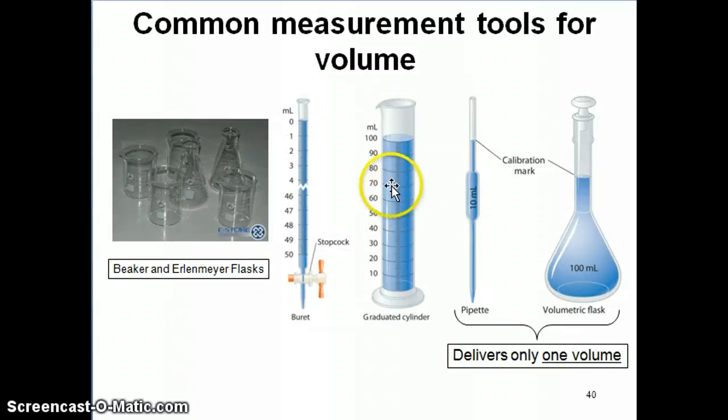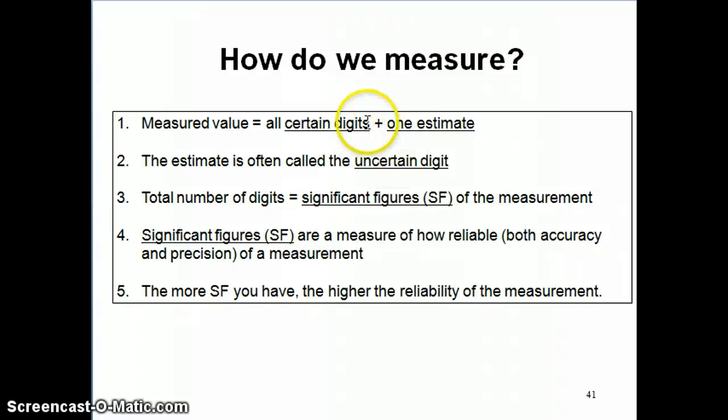So, the number 71, for example, is there on the instrument itself. So, that's called a certain digit. We're pretty sure that the number is 71 because it's written there. And then, what you do is that once you read all the certain digits that you can read from this instrument, then you add one estimate, which corresponds to your guess as far as what that volume might be. The estimate is what we refer to as the uncertain digit or uncertain number. So, when you add all the certain digits that you can read plus your estimate, all the digits that you can add up, that's what we refer to as the significant figure for your measurement.